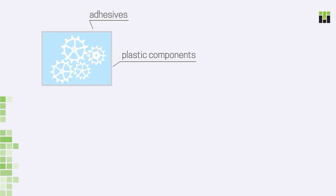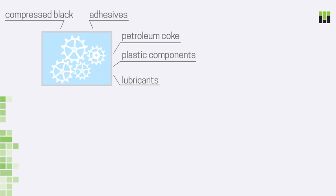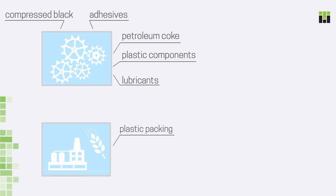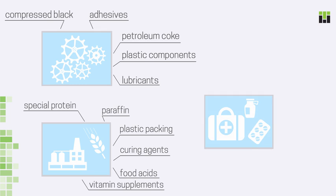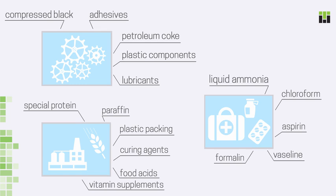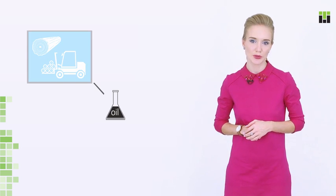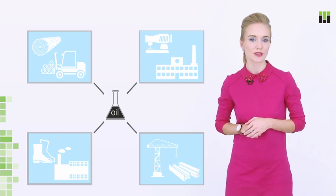Mechanical engineering and metal industries consume all-purpose adhesives, plastic components, lubricants, etc. Petroleum products are used to create fireproof lining of smelting furnaces. Food industry makes use of plastic packing, food acids, curing agents, and paraffin. Petroleum products are also used to create special protein and vitamin supplements. Pharma and beauty industries use petroleum products to produce liquid ammonia, chloroform, formalin, aspirin, vaseline, etc. Petroleum products are used in wood, fabric, shoe and construction industries as well.